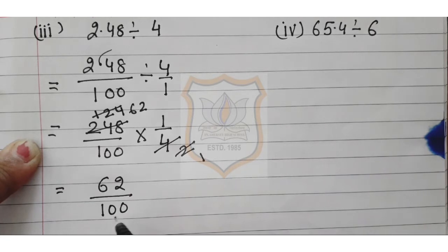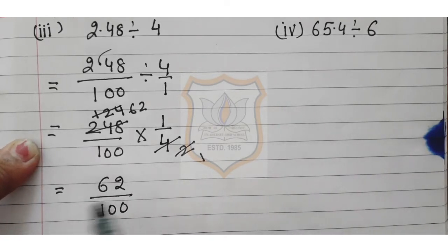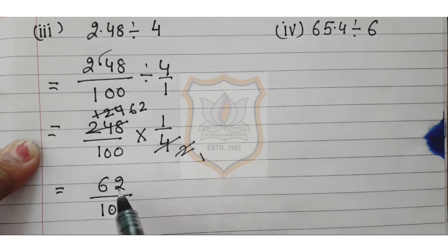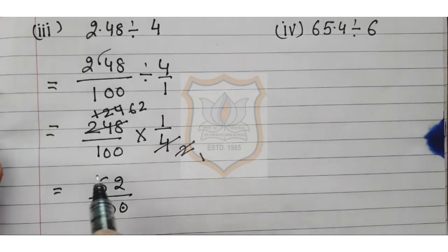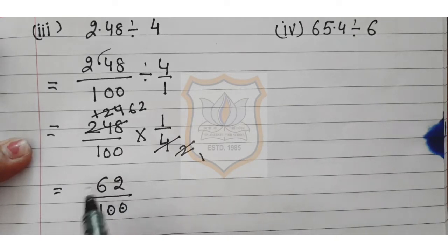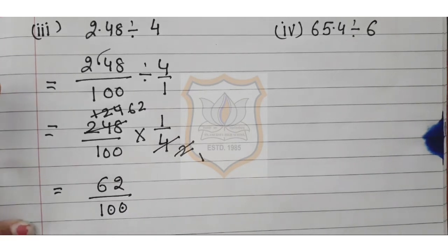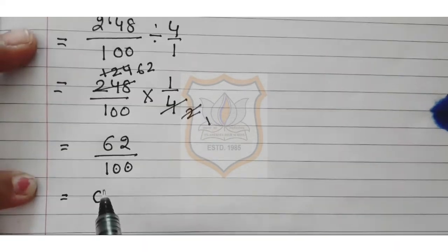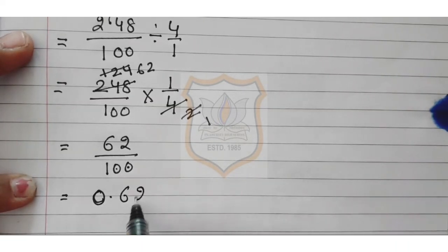So we get 62 upon 100. For the decimal placement: the denominator has 2 zeros, so the decimal moves 2 digits towards the left. That gives us 0.62. This is our answer.